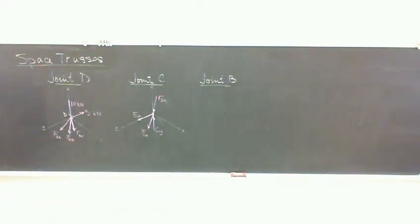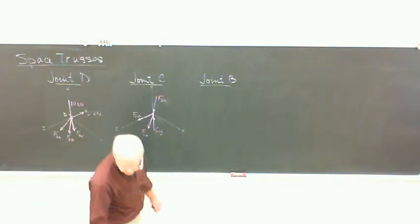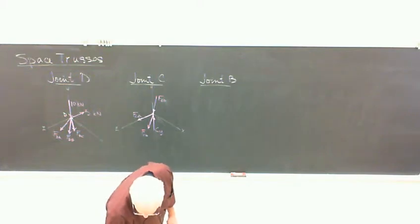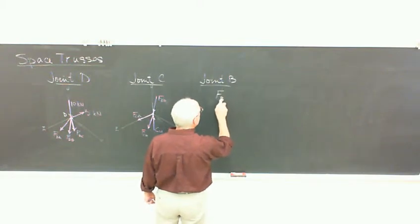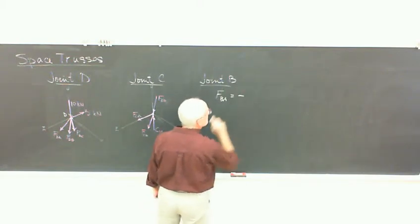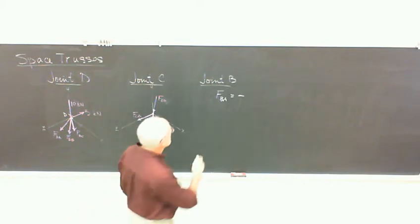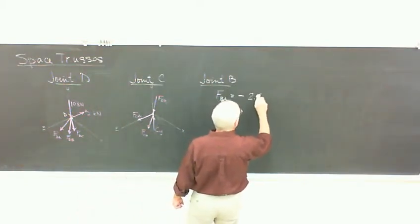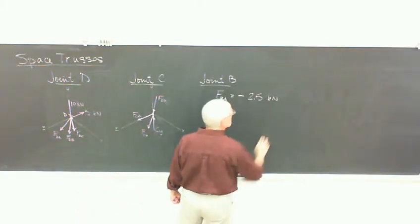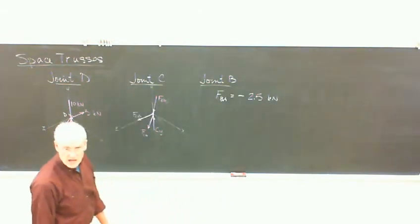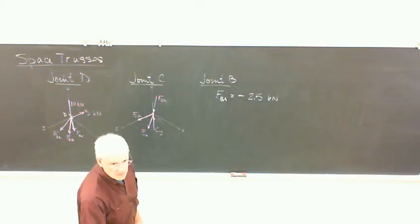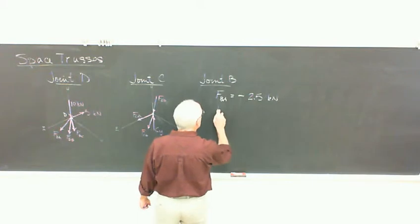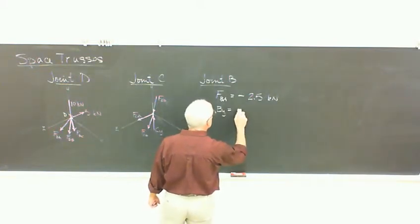And from that you get results like FBA is one of the unknowns and it comes out to be minus. So we know it's in compression. We get 2.5 kilonewtons. So that's a member that we could not take out of the structure. It's in compression so we wouldn't want to replace that with a cable. You can if you want that to be your last job with that company.